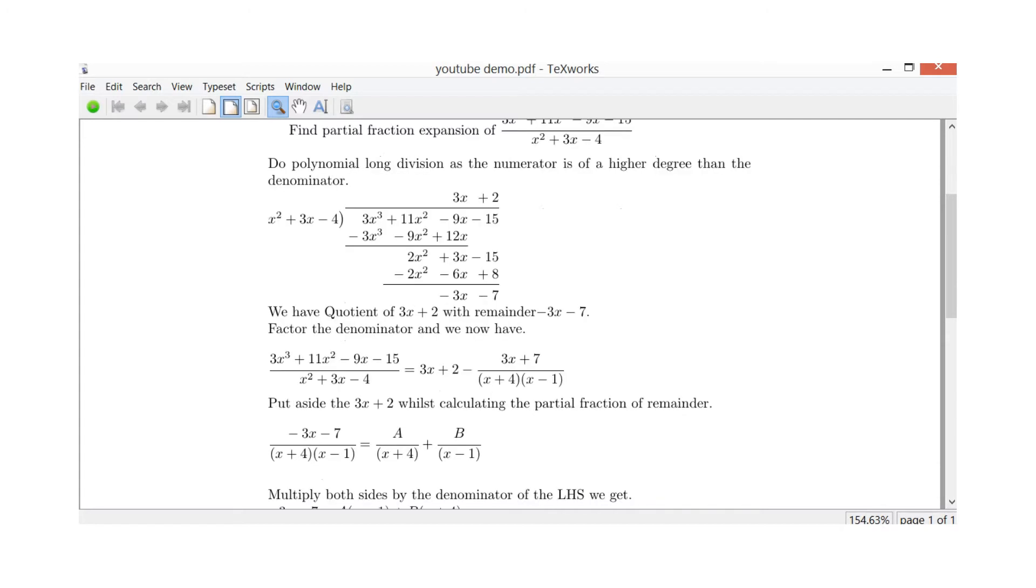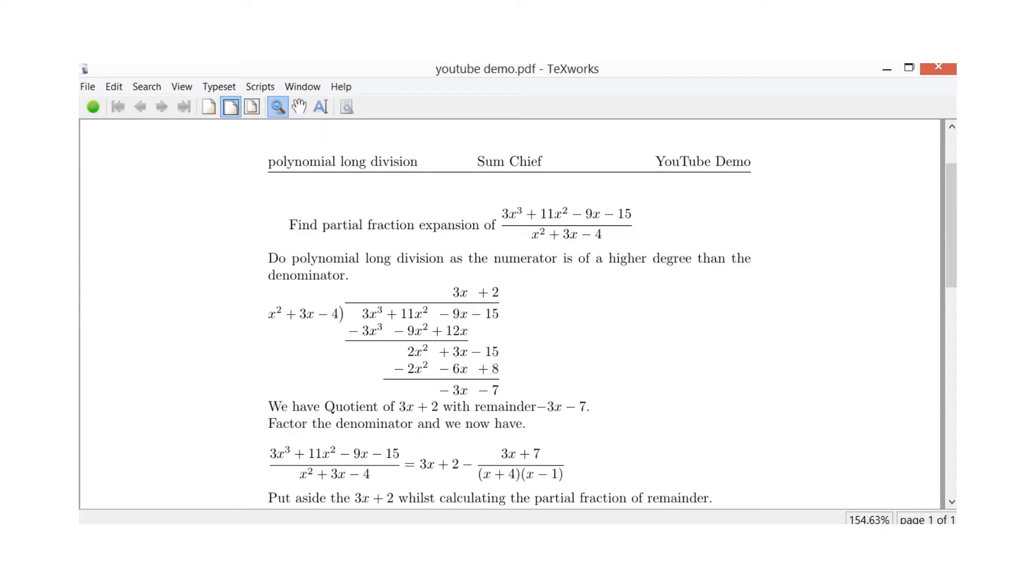So straight away we can see our denominator is x squared and our numerator is 3x cubed. They're the dominant terms in our fraction here. So as the denominator is of a lower term than the numerator, we can go straight into polynomial long division. So we get the denominator x squared plus 3x minus 4. We're going to divide that into our numerator which is 3x cubed plus 11x squared minus 9x minus 15.